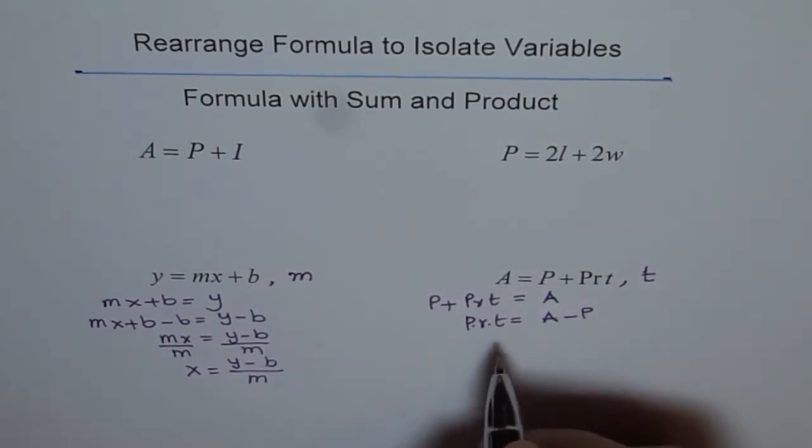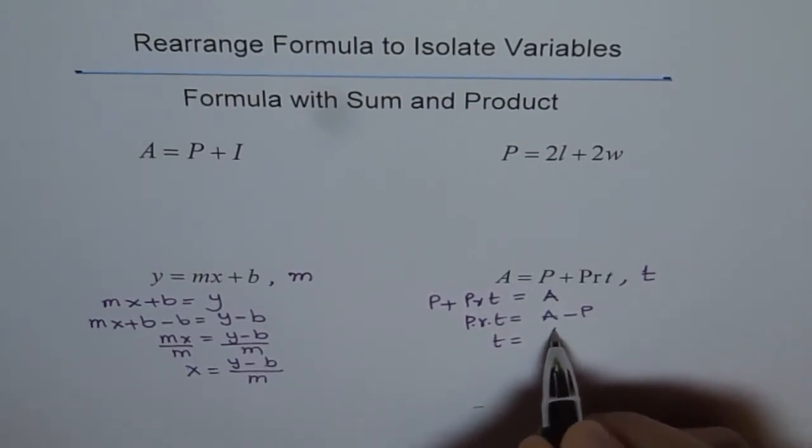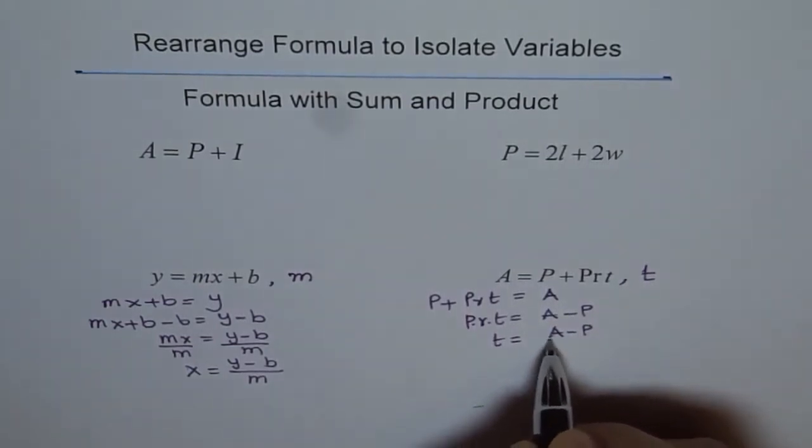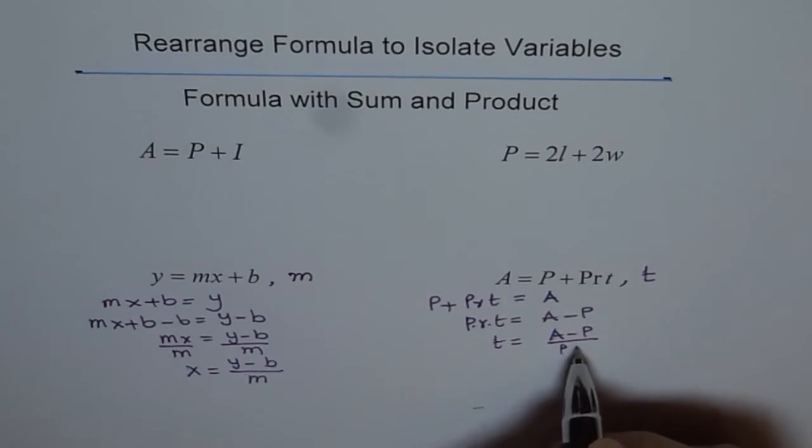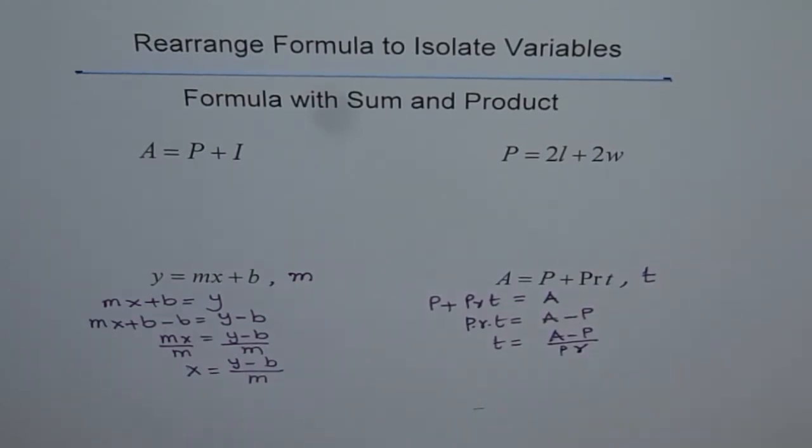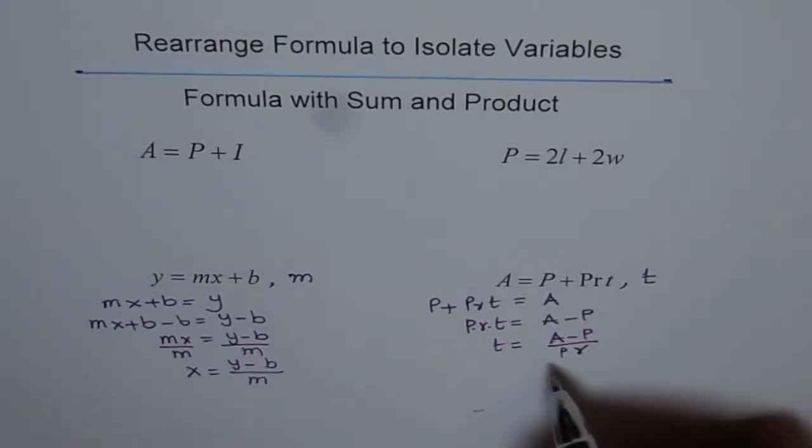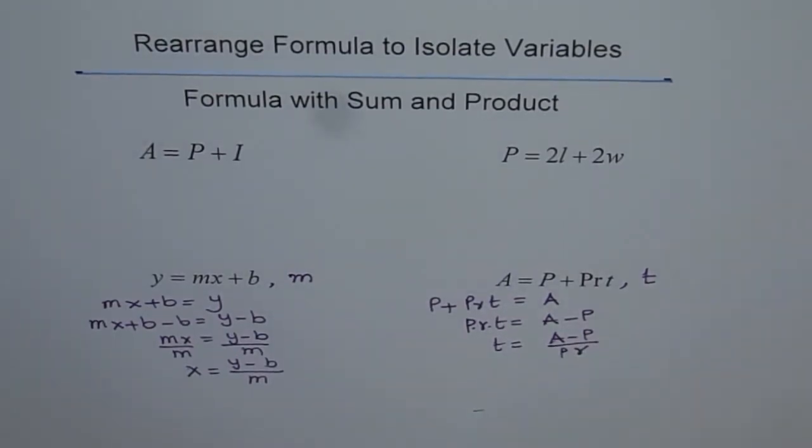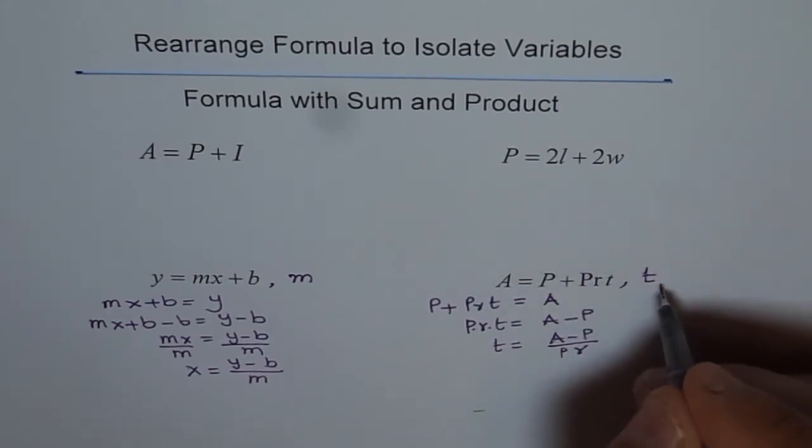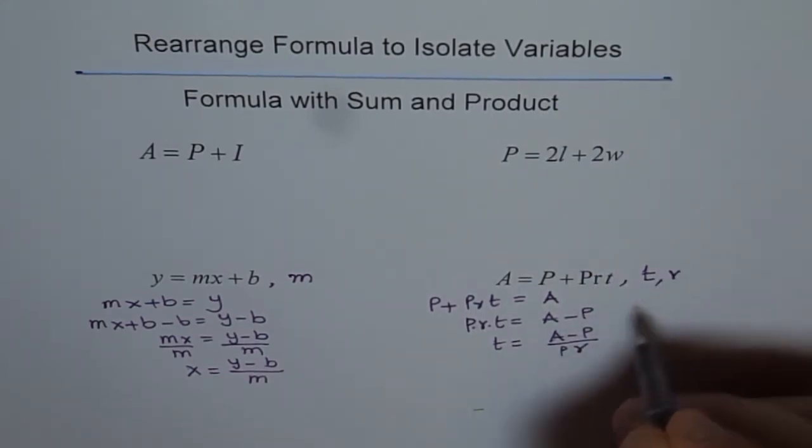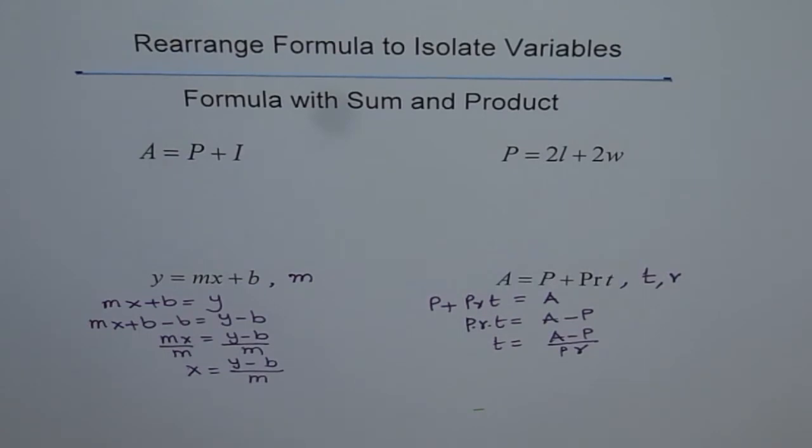Now, if I want T, then I have to divide by P and R. So, T equals to A minus P divided by P and R. That is how we can isolate time from this equation. Now, for you, you can try to isolate R in the similar fashion.